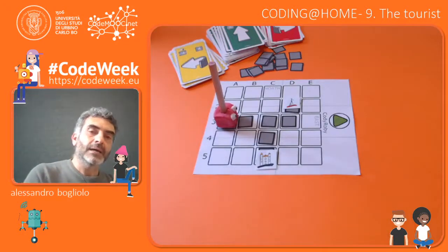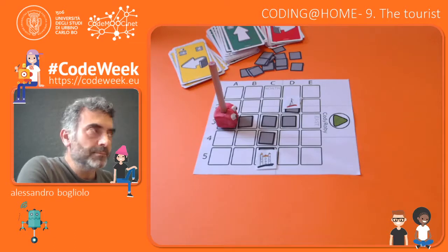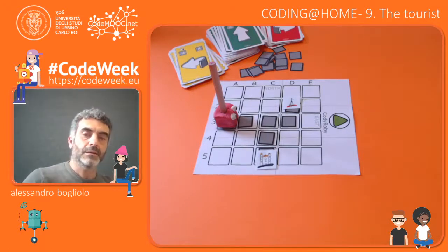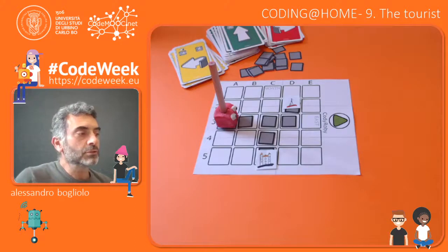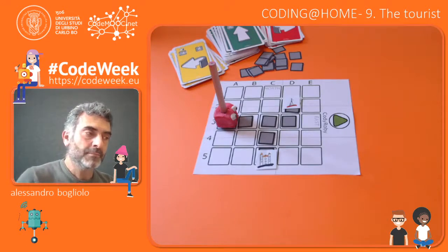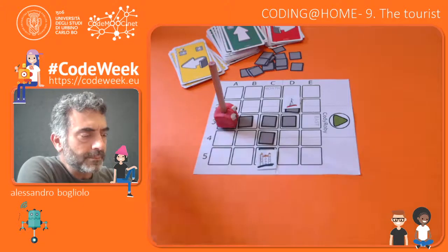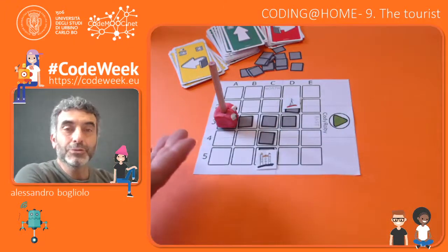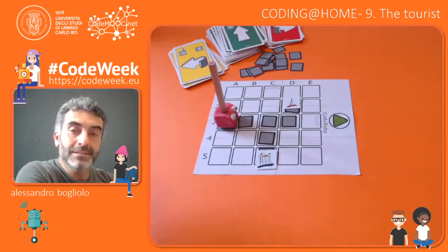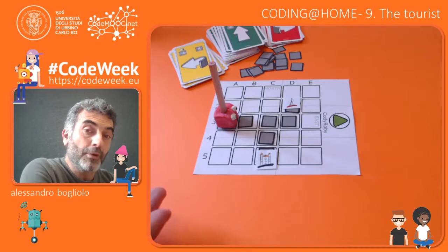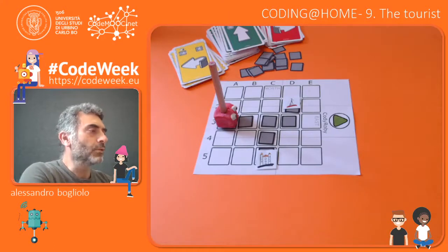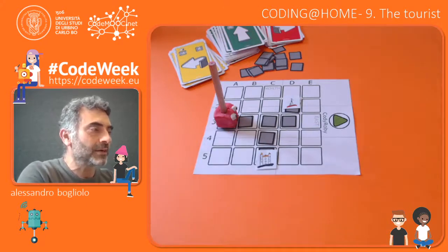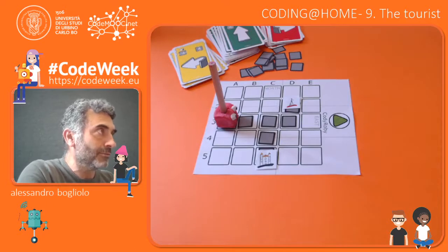The tourist is expected to ask for directions to reach one of the two monuments. Based on the monument the tourist chooses, the two teams — in this case myself and Anna — have to provide instructions as fast as they can. The first team who provides all the instructions has to press the start button to tell the tourist that they can start executing them, to see if the program really leads to the monument. So let's assume the tourist wants to go to the Ducal Palace. Anna, as fast as you can, provide the instructions by building the program in front of you, and I will do the same.